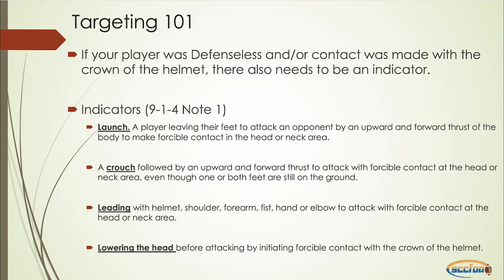Walking through the checklist: if the player is defenseless, and we have forcible contact to the head or neck area with the shoulder of the defensive player, then we ask — what is the indicator? Were they leading with the helmet, shoulder, forearm, lowering the head, or launching? If the player is not defenseless, then contact needs to be made with the crown of the helmet within that six-inch apex.